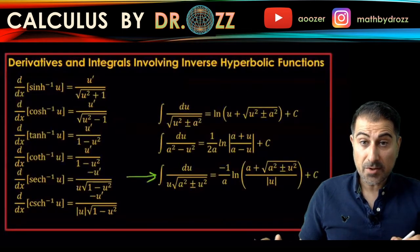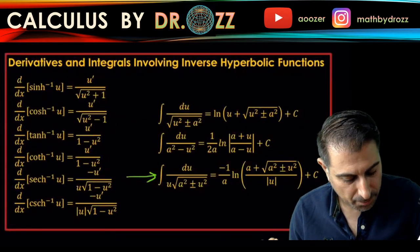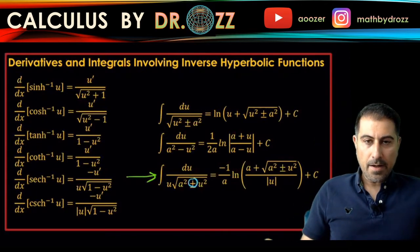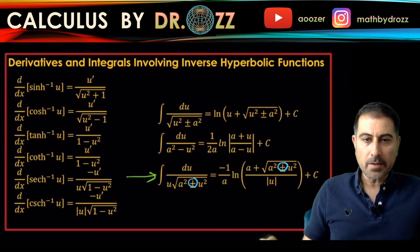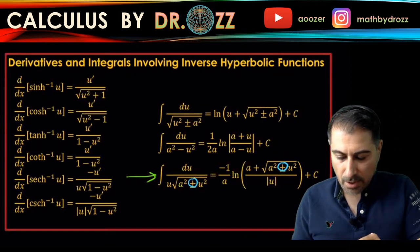So du over u a squared minus u squared. In fact, it's plus version of that. So I'm going to go with the plus version of that. So I'm going to circle the plus version of this. And u equals x apparently. And let's go back and check what a should be here.